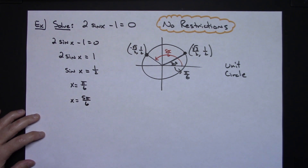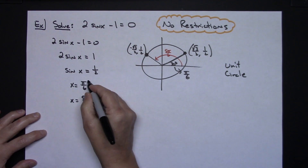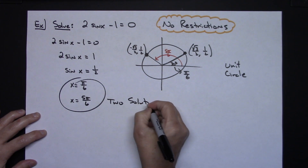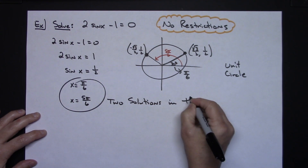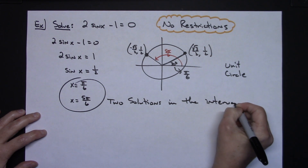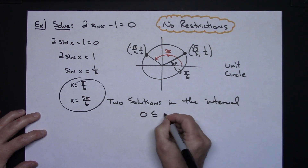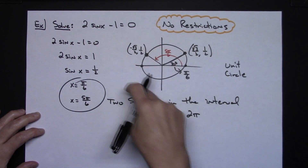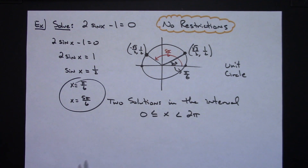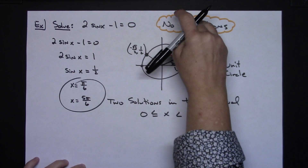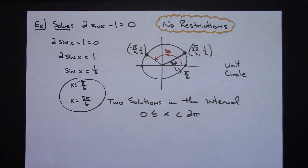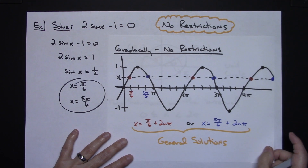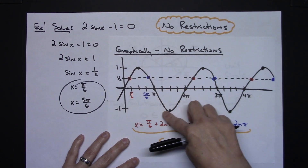So I have two solutions — π/6 and 5π/6 — in the interval 0 ≤ x < 2π. Those are the only two places in that interval where sine equals one half. But since the problem wants no restrictions, let's look at this from a graphical standpoint. I've sketched the sine curve, showing it's periodic in both directions.